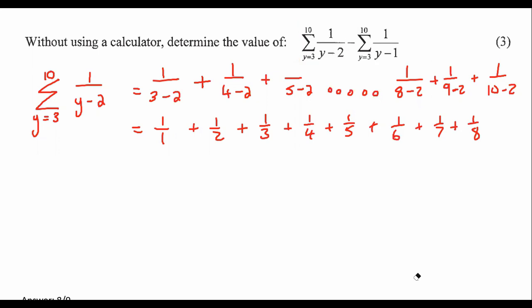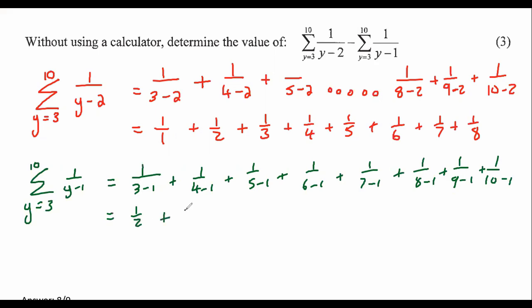Now I'm going to do this part over here. So you just start with the three. So it's one over three minus one plus one over four minus one, one over five minus one, one over six minus one. And then I'm just going to simplify: one over two, one over three, one over four, one over five, six, seven, eight, and nine.